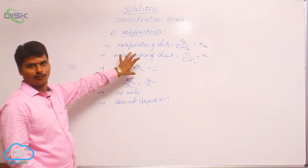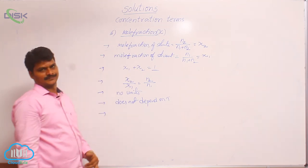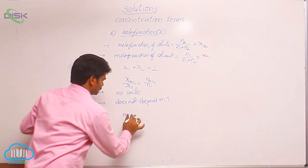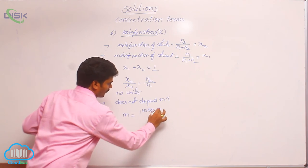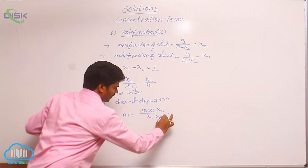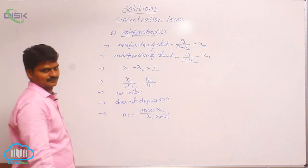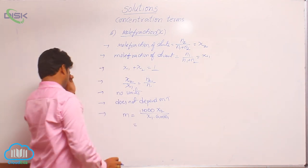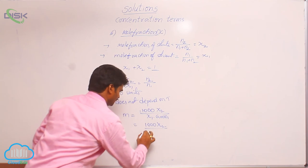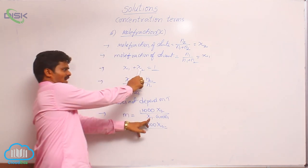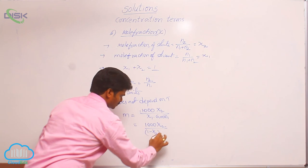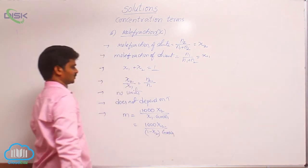These are the important points about mole fraction. Let us see the relation between mole fraction and molality. Molality = 1000 × (mole fraction of solute) / (mole fraction of solvent × gram molecular weight of solvent). We can also write it as: molality = 1000 × (mole fraction of solute) / ((1 − mole fraction of solute) × gram molecular weight of solvent).